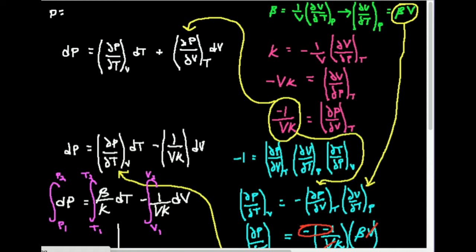If we use the ideal gas equation of state, pressure is equal to nRT over V. So pressure is ultimately a function of volume and temperature. Technically it's also a function of moles, but for a gas enclosed in a container with no reaction and no gas escaping, the number of moles isn't changing. So pressure is a function of volume and temperature.